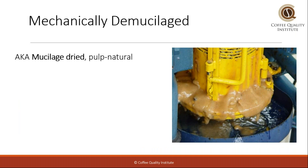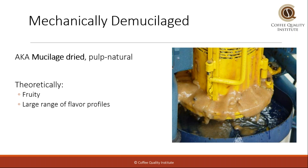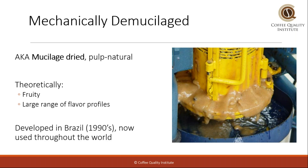Then we have mechanically demucilaged coffee. This is mucilage-dried, otherwise known as pulp natural. The flavor of mechanically demucilaged coffees is theoretically fruity and they also can have a large range of flavor profiles. What's the difference between a honey coffee and a mechanically demucilaged coffee? The mechanically demucilaged coffee has gone through a demucilager — that is the easiest way to tell. Now, some people that make honeys make them with demucilagers, and in that case they would be both mechanically demucilaged and honey coffees. You really just have to ask the right questions. This process was developed in Brazil and is now used all over the world.